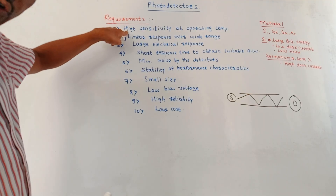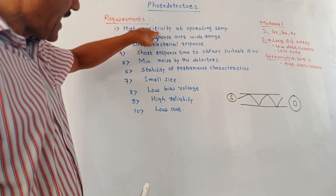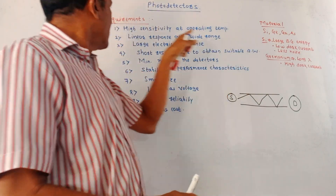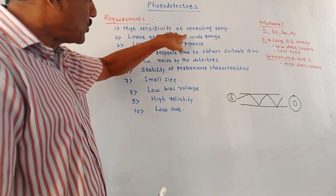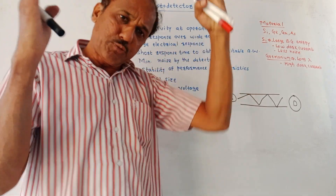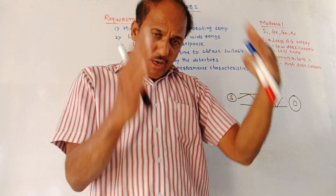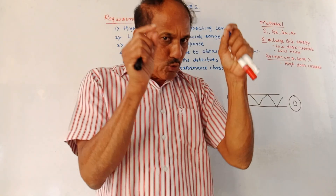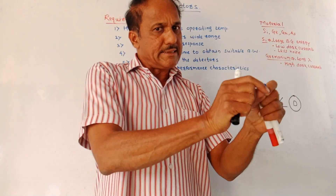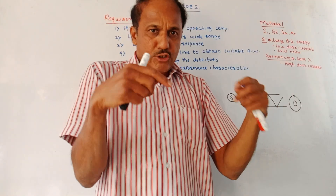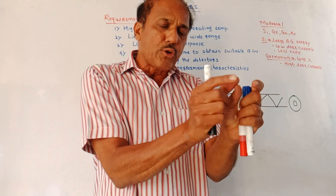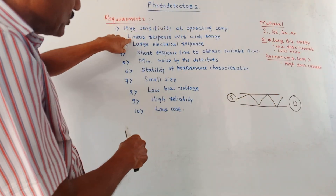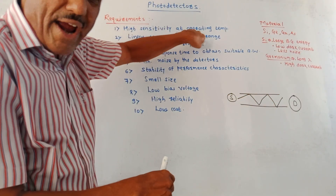First, the photodetector should have high sensitivity at the operating temperature. Second, linear response over a wide range. Response means the graph of output versus input — the output of a photodetector is an electrical signal, usually a current, and the input is photons or incoming light rays. So this response must be linear over a wide range.